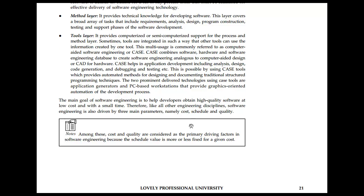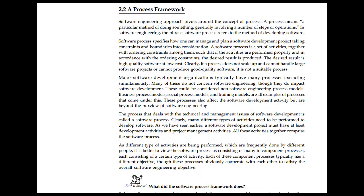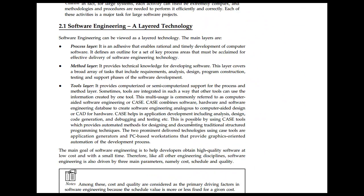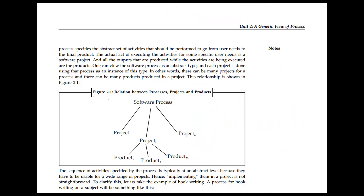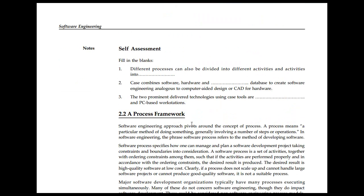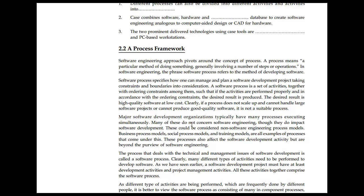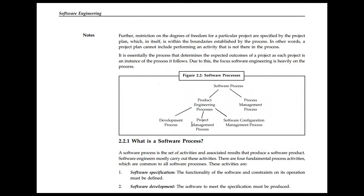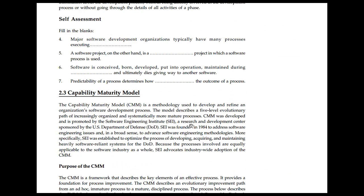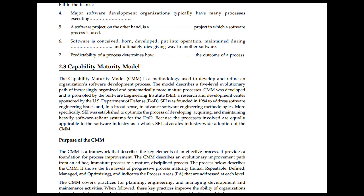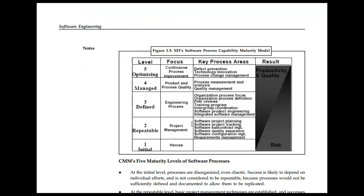The goal of software engineering is achieved through the process, method, and tool layers. Moving down, we have the process framework, and just below that are software process and software development. Then you have the Capability Maturity Model, which is used to define an organization's software development process and assess whether the capability exists or will be used.